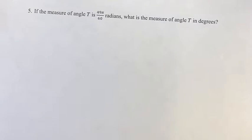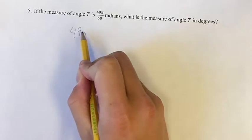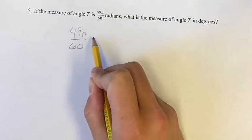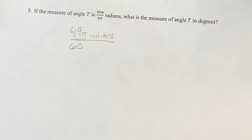Welcome back to another video. This problem we're looking at angle T, and we're given that its measure is 49π over 60 radians. We're asked, what is the measure of angle T in degrees?